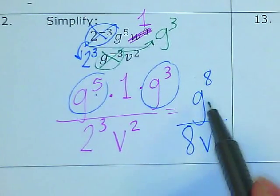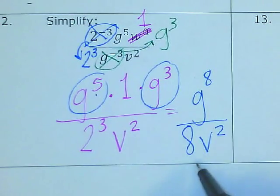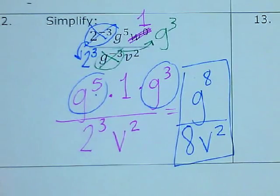I look at my new expression and say, do I have the same bases anywhere that I can combine? No. No negative exponents? No. No simplification of numbers? No. So now I am finished and this is the simplified form.